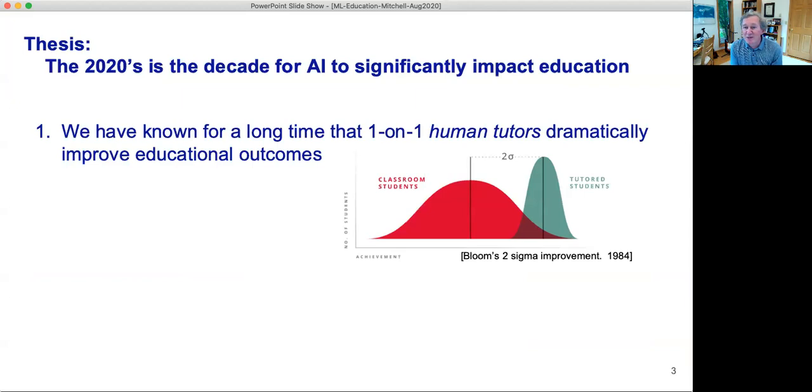We've known since 1984, a famous study by Bloom, that showed that students who received human tutoring would outperform classroom students who didn't get human tutoring by two sigma. That means 95% of the tutored students would outscore the classroom students, a big effect.